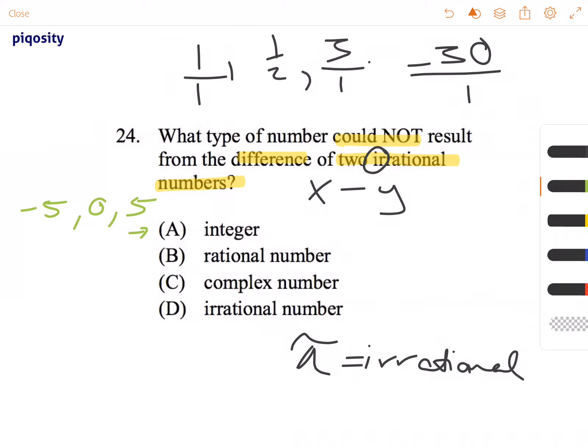If we subtract those, these are not irrational numbers, because these can all be represented as fractions in some way, including 0. So answer choice A can't be the result of that difference between two irrational numbers. The same thing is true for a rational number. These are also rational numbers, so answer choice B is not correct.